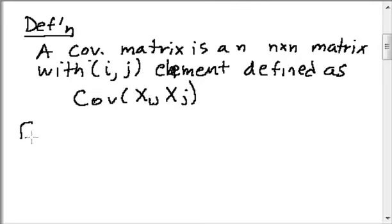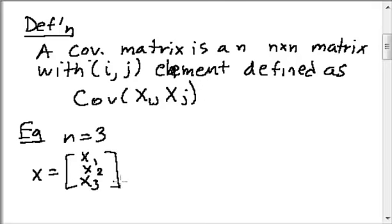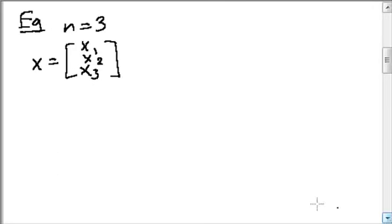So let's do an example. Let's say n equals 3. So I've got x is equal to x1, x2, and x3. And so what I'm going to do for the covariance matrix is as follows. I've got to have a 3 by 3 covariance matrix.